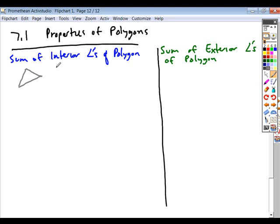If we took a triangle, what is the sum of the interior angles in a triangle? The interior angles add up to 180, right?